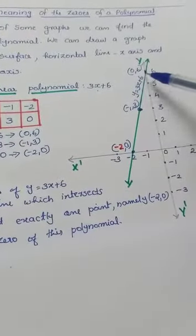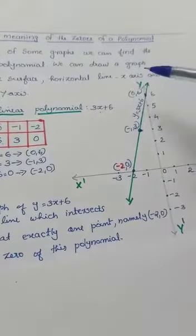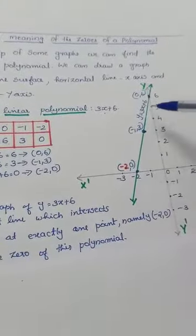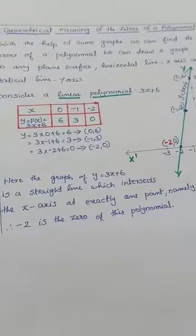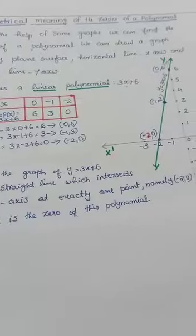Plot the points (0,6), (-1,3), and (-2,0). Join these points and we will get a straight line. Here the graph y equals 3x plus 6 is a straight line which intersects the x-axis at exactly one point.